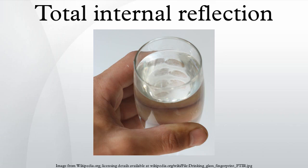Total internal reflection of light can be demonstrated using a semicircular block of glass or plastic. A ray box shines a narrow beam of light onto the glass. The semicircular shape ensures that a ray pointing towards the center of the flat face will hit the curved surface at a right angle. This will prevent refraction at the air-glass boundary of the curved surface.